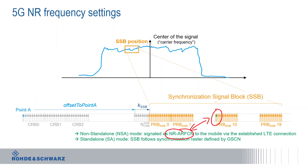In standalone mode — the mode that is purely 5G only — this SSB frequency definition basically follows a different raster. We will have to learn what that means by understanding the synchronization raster and the so-called global synchronization channel numbers. So let's take a look.